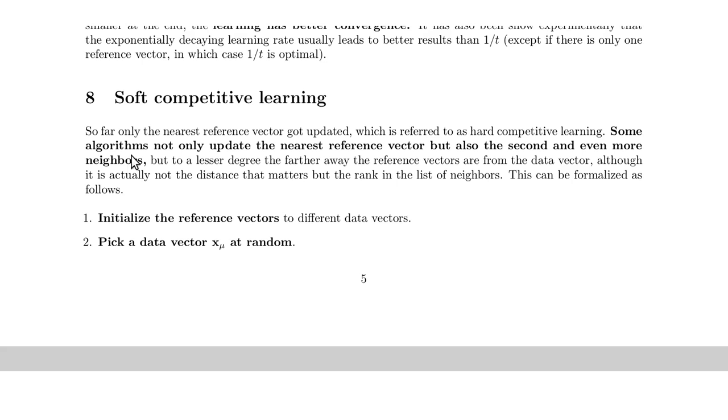So now in soft competitive learning you have something like, you have a few data points and your, let's say, three reference vectors and now they are positioned already quite nicely, right? So that's maybe not helpful.